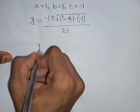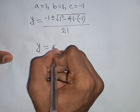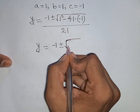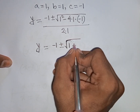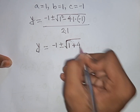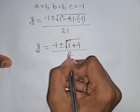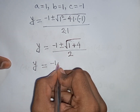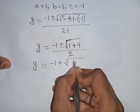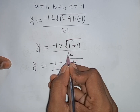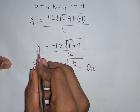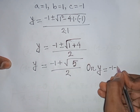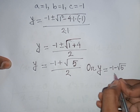So y equals minus 1 plus or minus square root of (1² minus 4 times 1 times negative 1) divided by 2 times 1. This gives y equals (minus 1 plus square root of 5) divided by 2, or y equals (minus 1 minus square root of 5) divided by 2.